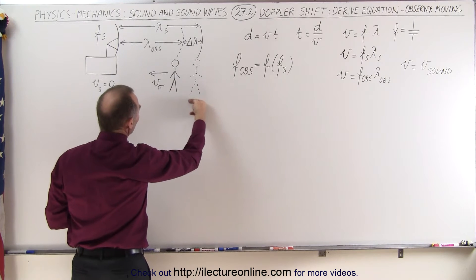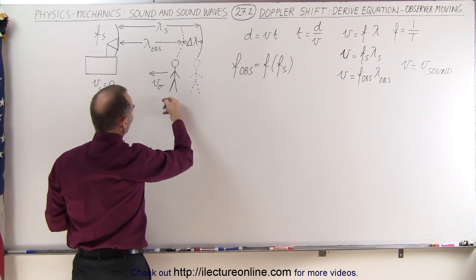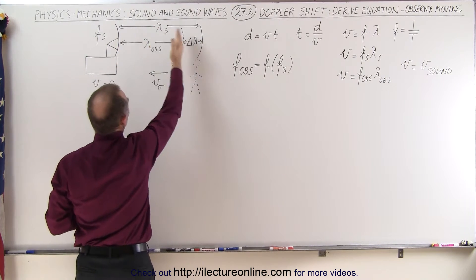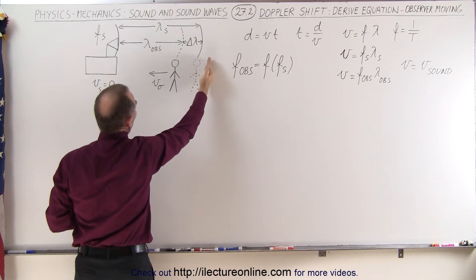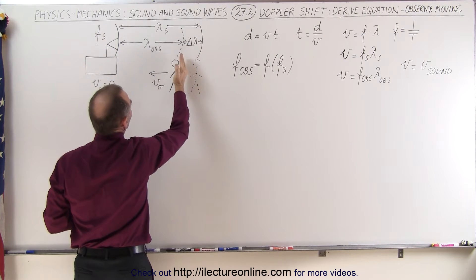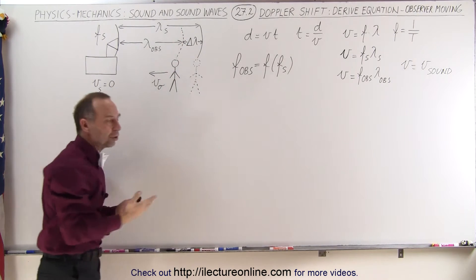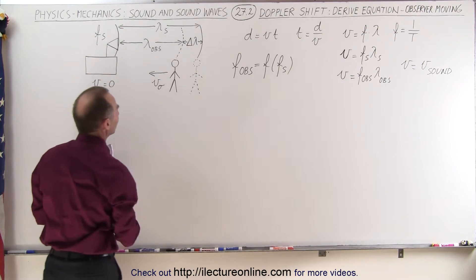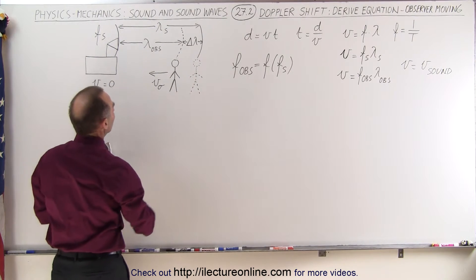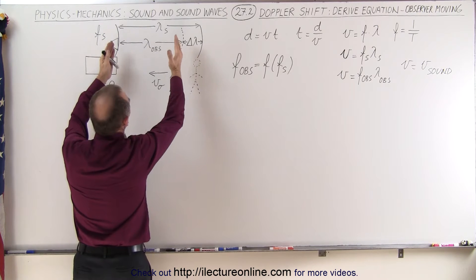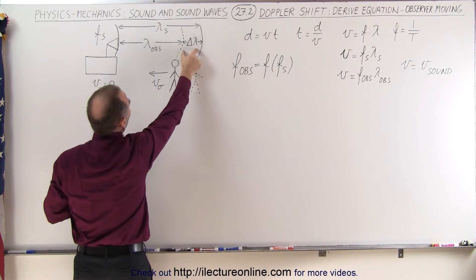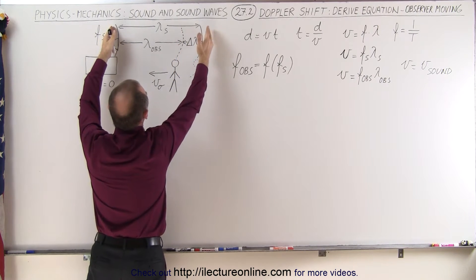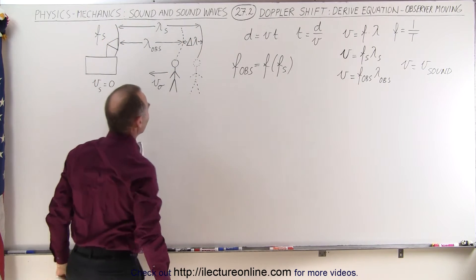But the observer is moving towards the source, so before the next wave is sent, the observer will have moved some distance and will actually meet the wave sooner than it would have if the observer had stayed in place. This becomes the observed wavelength, and there's a difference between the wavelength of the source and the observed wavelength.